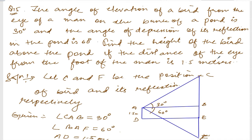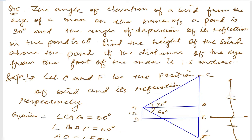What we need to understand is that DE is a point, and there is a bird here. The reflection of the bird — the distance from the pond surface up to the bird and down to the reflection — will be the same. So CE and EF will be same. Also, BE and AD are the same, both 1.5 meters.